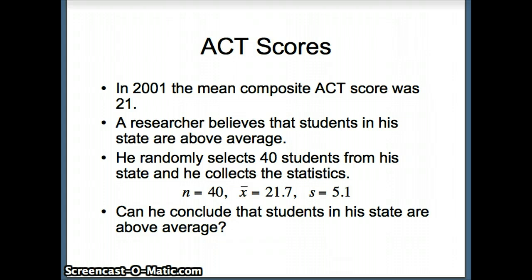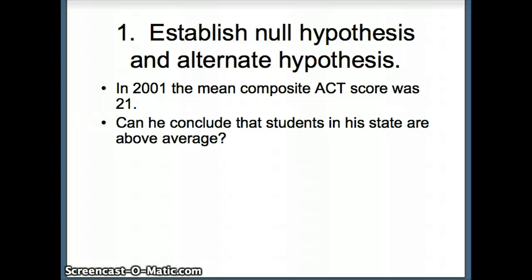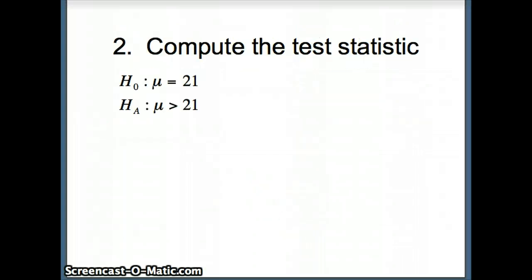He wants to ask whether students in his state are above average with respect to the ACT composite score. The first thing is establishing the null and alternative hypotheses. In 2001 the mean composite was 21, so we compare our mean against 21. He wants to see if his students are above average, indicating a one-tailed test. H naught: mu equals 21 versus H A: mu is greater than 21.